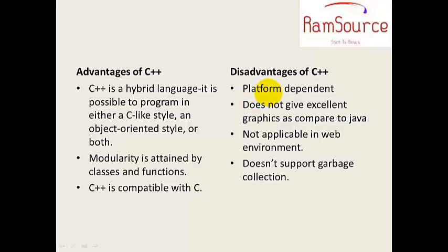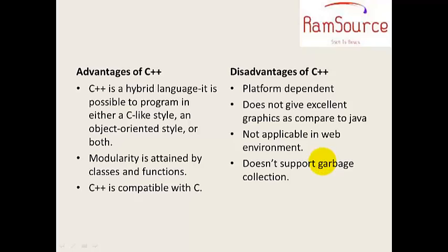Disadvantages: C++ is platform dependent, whereas Java is platform independent — C++ works only on certain platforms. C++ does not give excellent graphics compared to Java, which is more graphics-oriented. C++ is not applicable in the web environment; it is used for system software and creating Windows applications, not web applications. Also, C++ does not support garbage collection — garbage means unwanted values — whereas Java does support garbage collection.